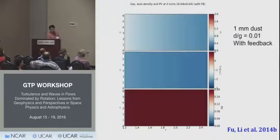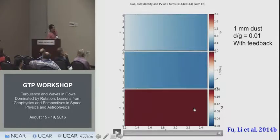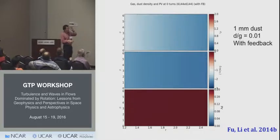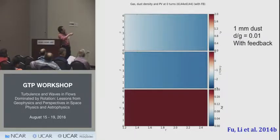Running out of time — the speaker summarizes results: based on that mechanism, in a simulation with radius on one axis and 0 to 2π on the other, a planet placed at radius 1 leads to the instability developing further.